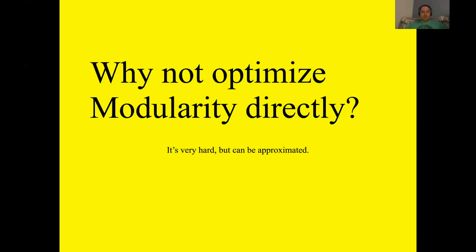One thing you might be thinking after we talked about modularity and how modularity is one good measure to determine whether the network has been partitioned well is the obvious question: Why not optimize modularity directly? If modularity is the measure that we're using to determine whether the partitioning is good or not, then why would we do anything else other than simply optimizing modularity?